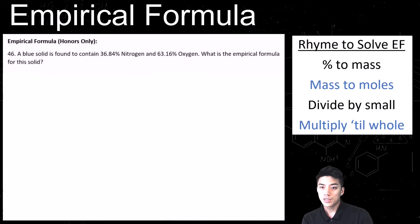Number 46, a blue solid is found to contain 36.84% nitrogen and 63.16% oxygen. What is the empirical formula for this solid? So we're going to use the rhyme that I have above my head, and we're going to try to make sense of this problem, and we're going to figure out the empirical formula.